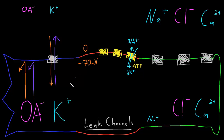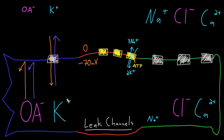The membrane potential where an ion has balanced electrical and diffusion forces so there's no net movement of that ion across the membrane is called the equilibrium potential, also called the reversal potential. It actually doesn't take that many potassium ions to exit to reach the equilibrium potential — something like less than 1% of 1% of all the potassium ions in the neuron have to leave, so the effect on intracellular potassium concentration is really negligible.